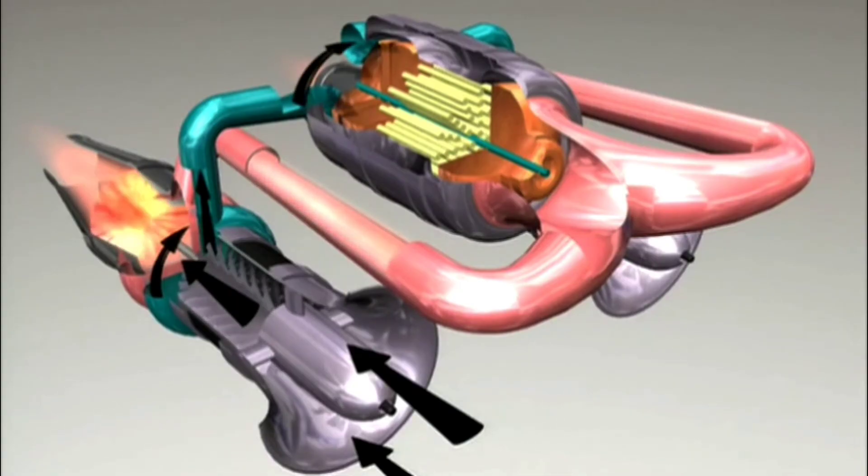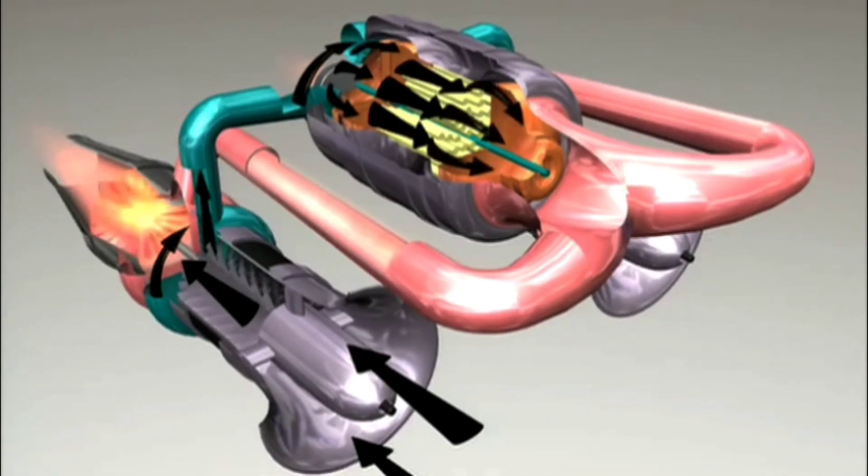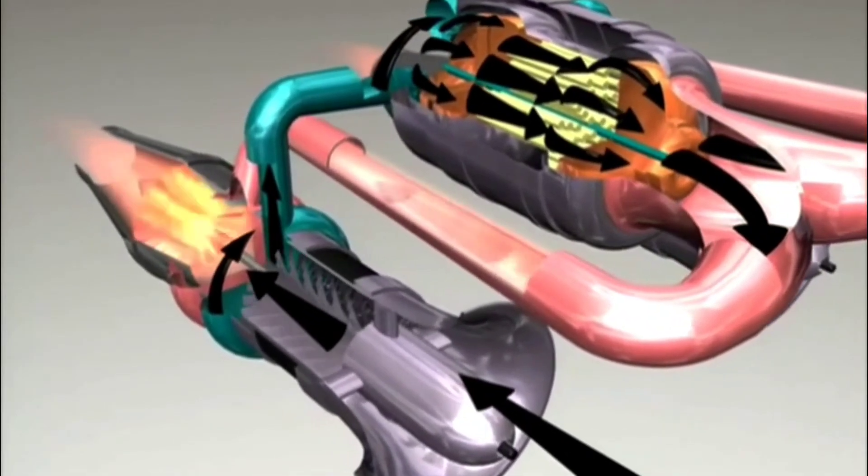The advantage of direct power is that it's simpler. Air passes through holes in the reactor and comes out hot. In principle, it's simpler.